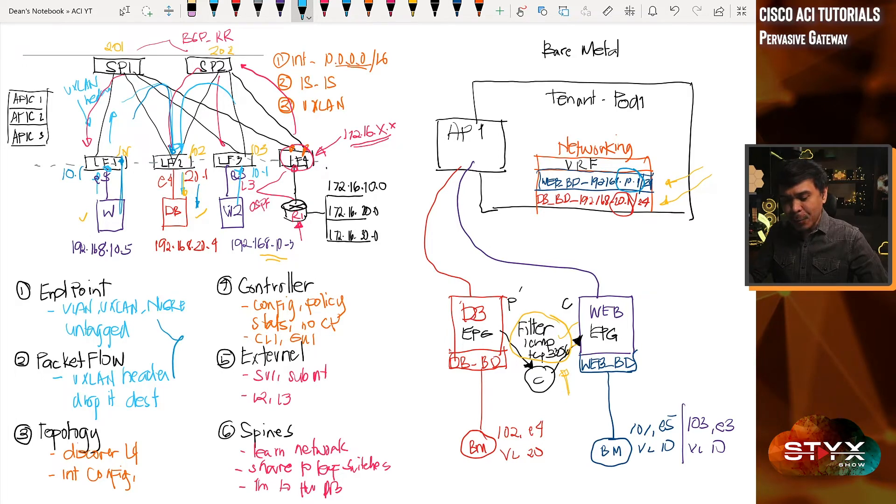Leaf2 will replace it to the destination header. And this serves also as the default gateway 20.1, as it sends it to the destination endpoint, which is the database 192.168.20.4.